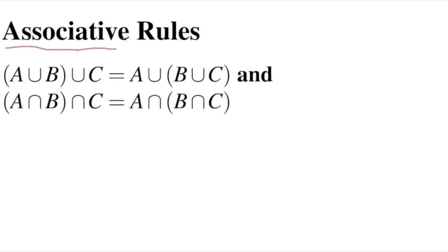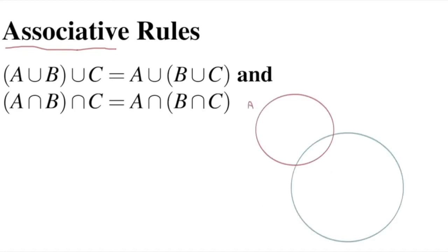The next rules are called the associative rules. If we have three or more sets connected by the union operator - A union B union C - the associative rules tell us it doesn't matter in what order we combine the sets into pairs. We could unionize A and B and then unionize the result with C, or we could unionize B and C and then unionize that result with A. B can associate with either A or C first. The same is true with intersection.